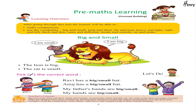Pre-Math Learning Concept Building Learning Outcomes: After going through this unit, the learner will be able to make comparisons and use the vocabulary: Big and Small, Long and Short, Far and Near, Heavy and Light, Right and Left, Thick and Thin, Same and Different, Inside and Outside, On and Under.